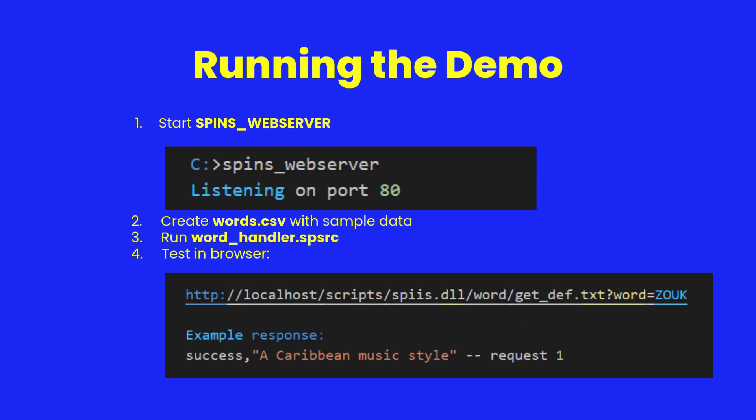To run the demo, start spins, prepare a CSV data file, launch your handler, and test in the browser. When you request a definition, the handler immediately responds with a success message, demonstrating the persistence and speed of FastCGI.